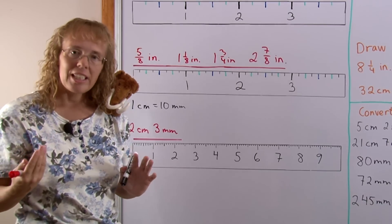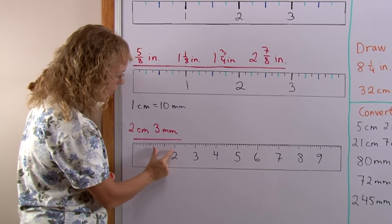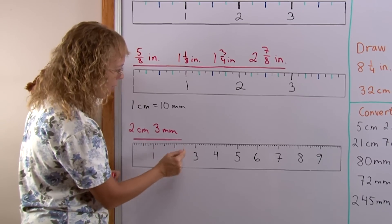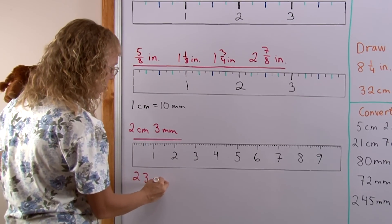Or you could also write it in whole millimeters because here would be 10 millimeters. Here's another 10. Total 20. And then 3 more. So it is also equal to 23 millimeters.